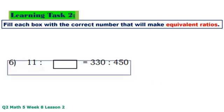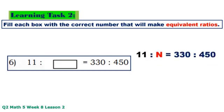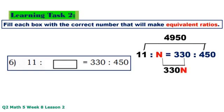Number 6: 11 times 450 equals 4,950, N times 330 equals 330N. 4,950 divided by 330 equals 15.